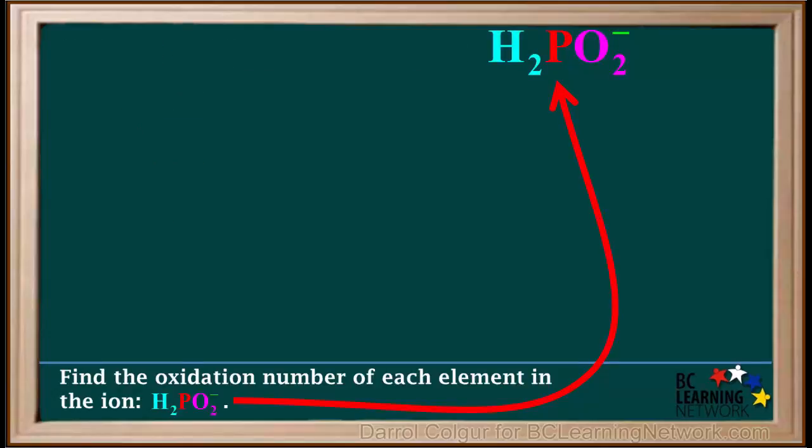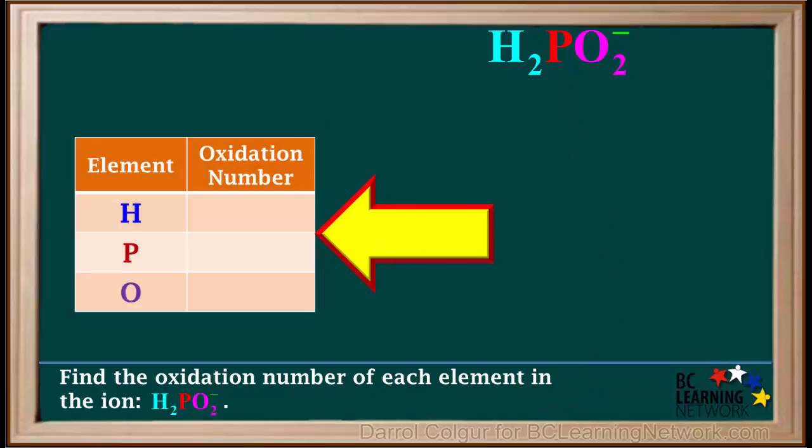We'll start by writing the formula up here, and a table here for the oxidation number of each element.